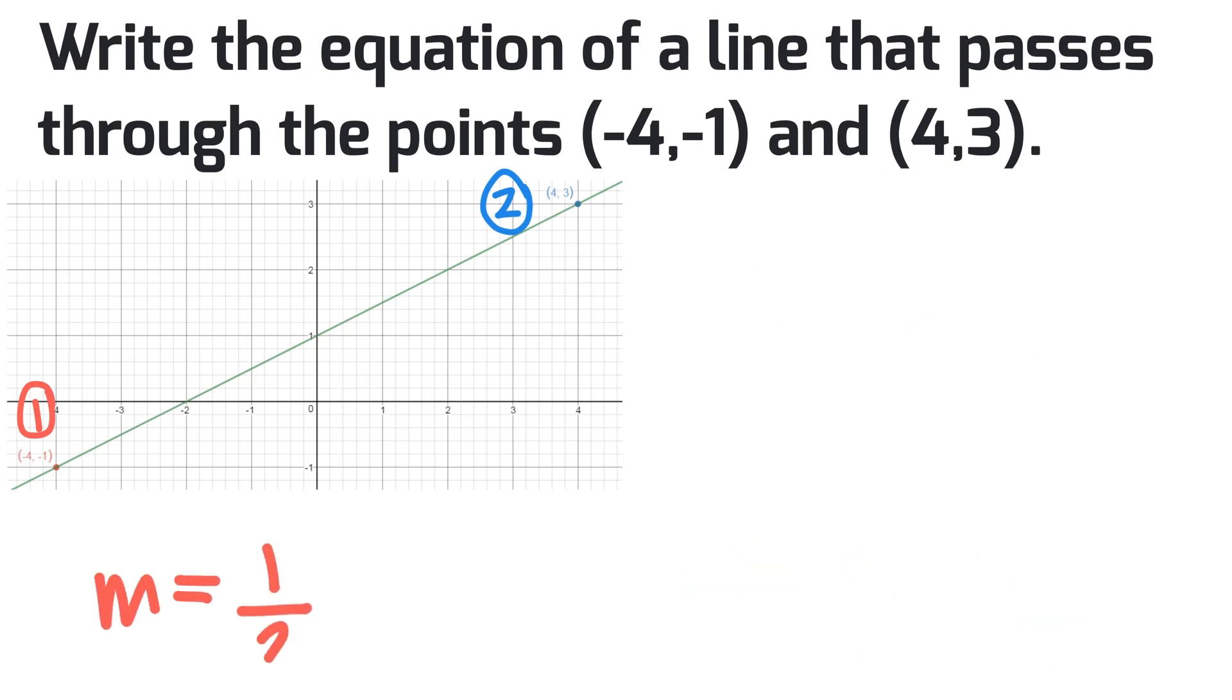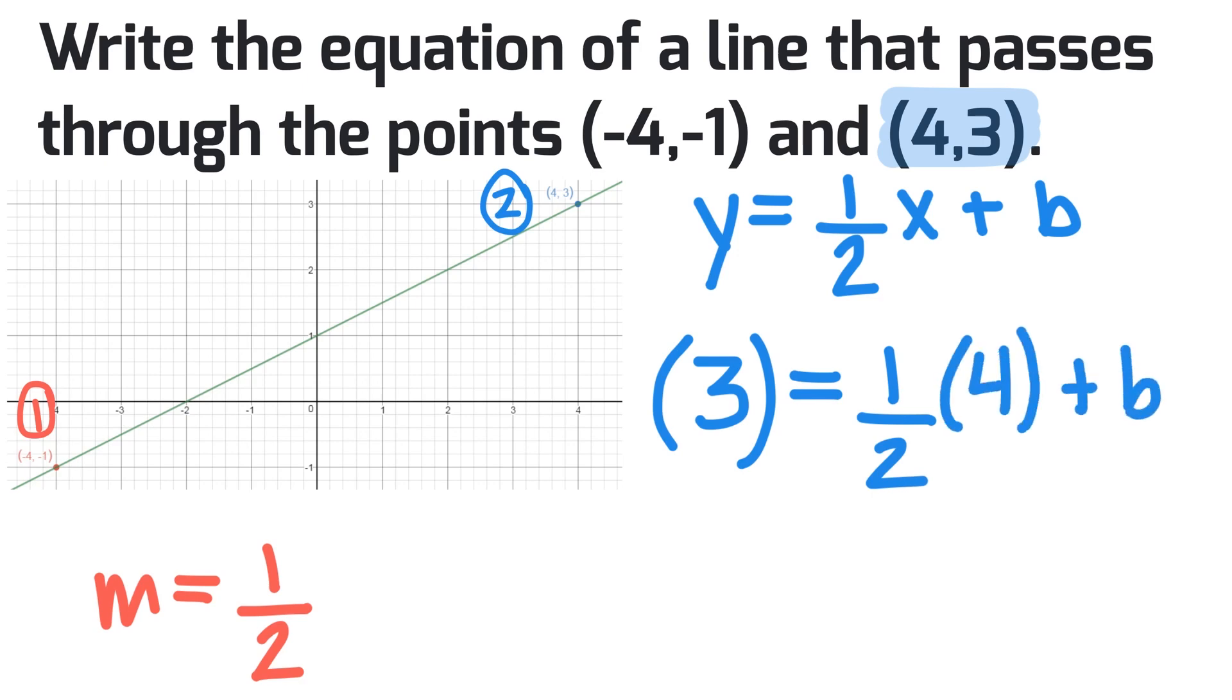And then what I need to do is I need to use one coordinate to figure out my y-intercept using the equation that I have here. I'm going to take any coordinate. I'm going to use (4,3) for example where my x is 4 and my y value is 3. So my equation is 3 equals 1 half multiplied by 4 plus b. We can simplify that to be 3 equals 2 plus b. Therefore b has to be 1.